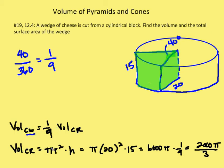The volume of the cheese round equals pi r squared h — the area of the base times the height. So I have pi times 20 squared times 15, which gives me 6,000 pi. Multiplying by one-ninth, I end up with 2,000 pi over 3. That's the answer for the first part of this problem.